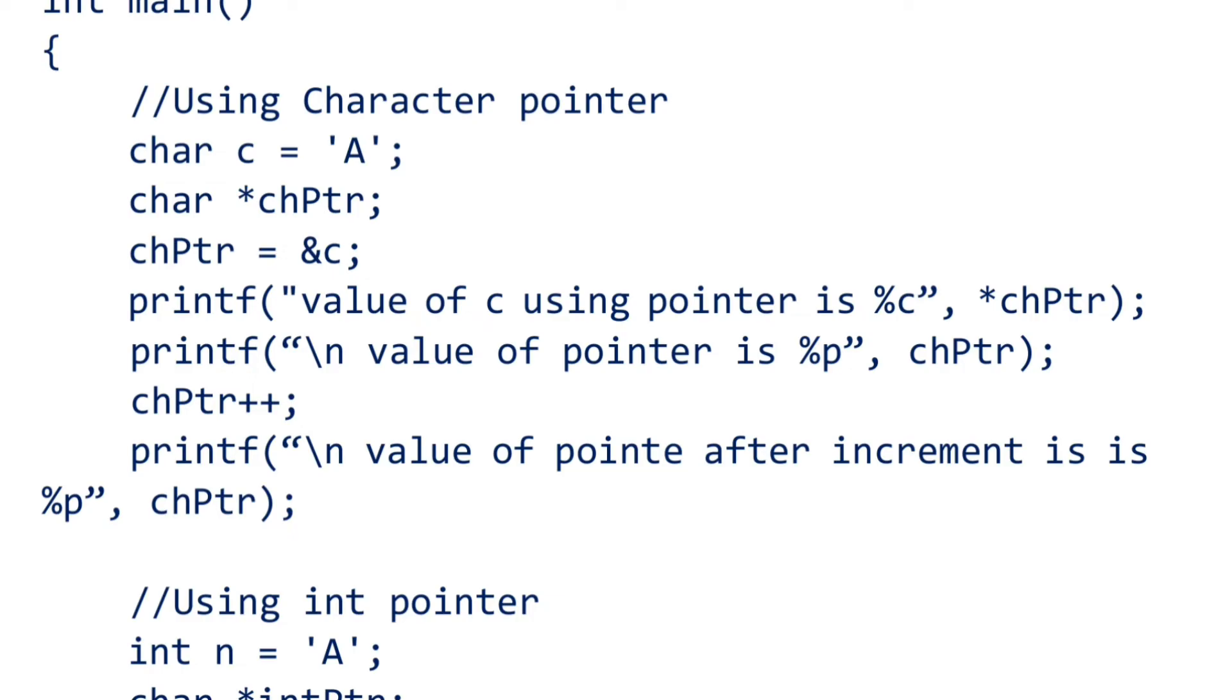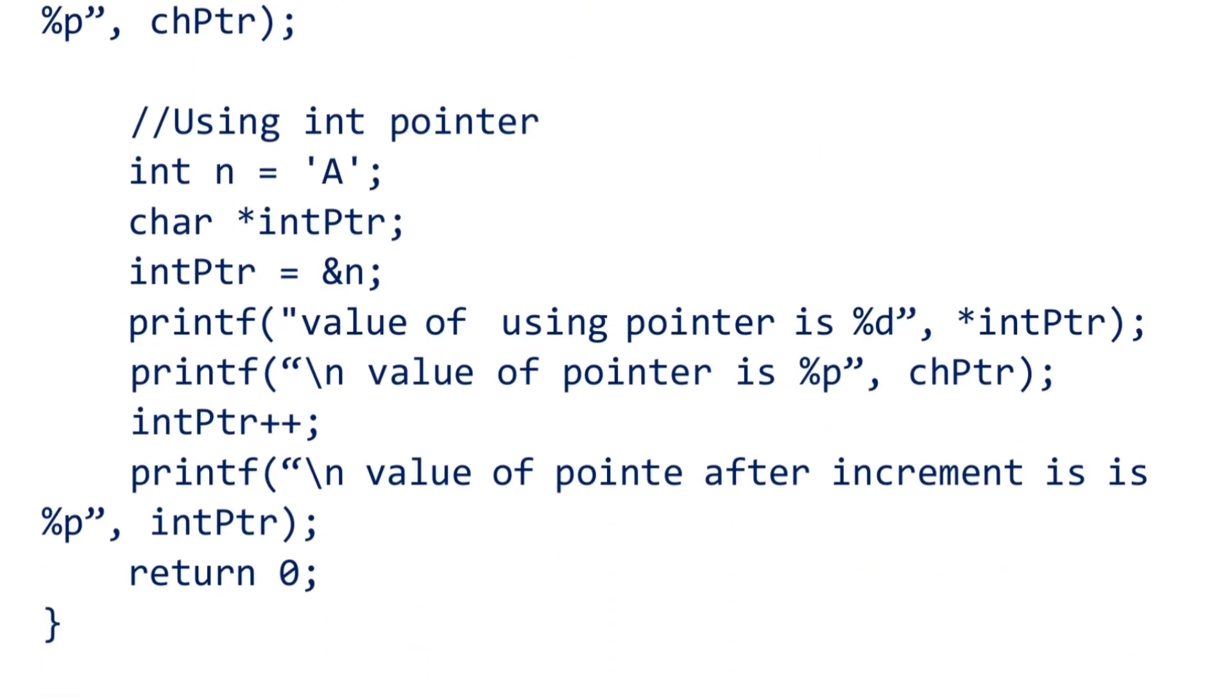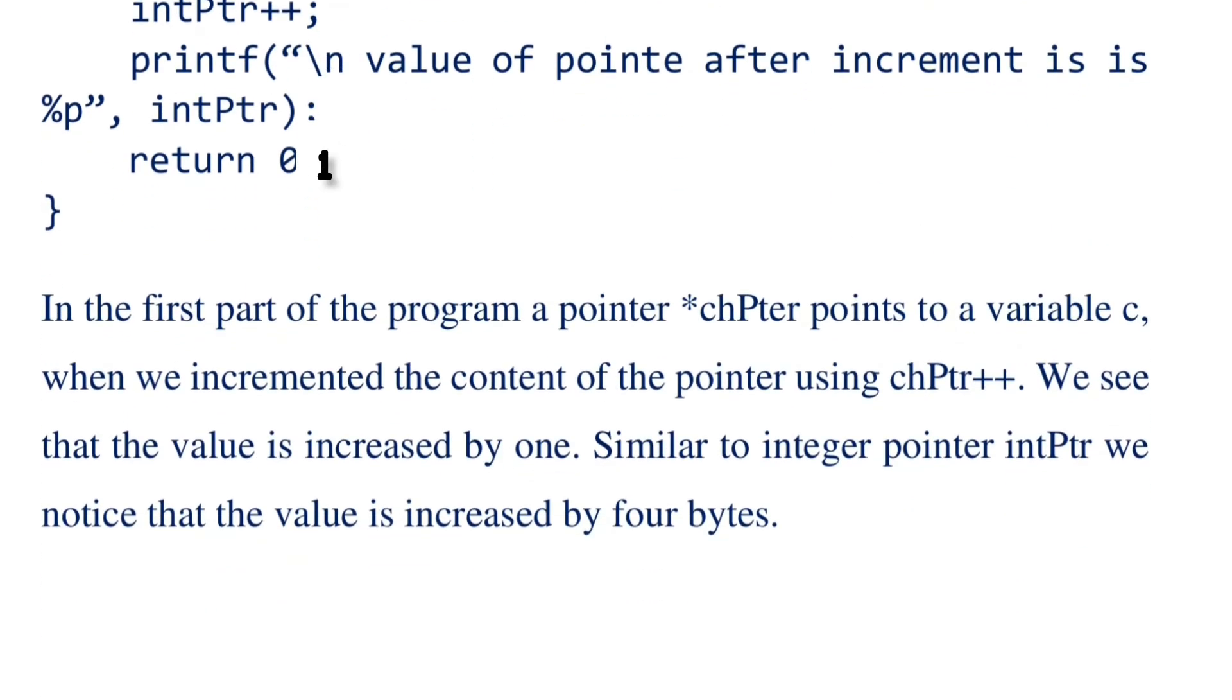The same thing we repeated for the integer also. So it should be int n equal to any number you can provide here. As you can see, the first program we have pointer chPtr pointing to variable c. When we increment the value of chPtr, we see the value will increment by one. Similarly, if we do it with int pointer, the value will increment by four bytes.